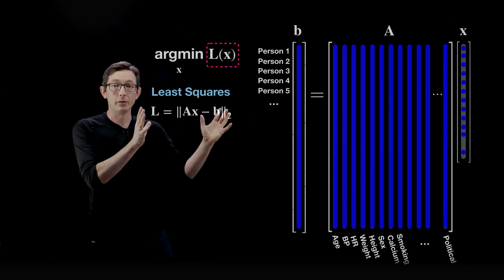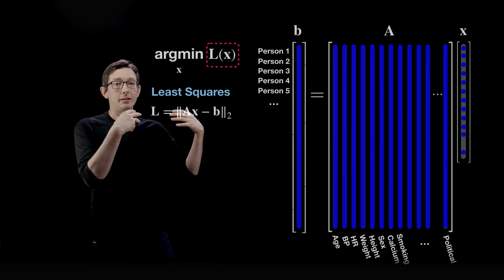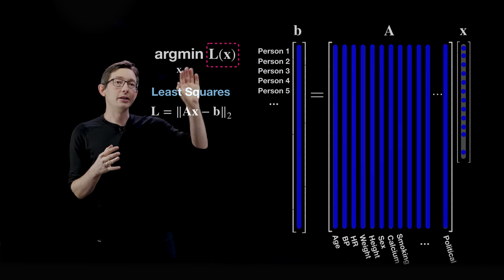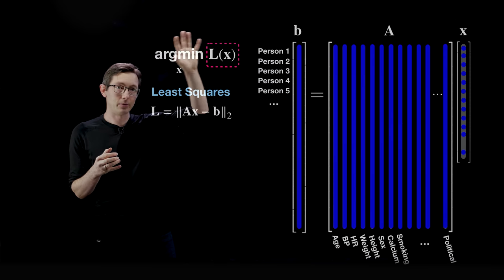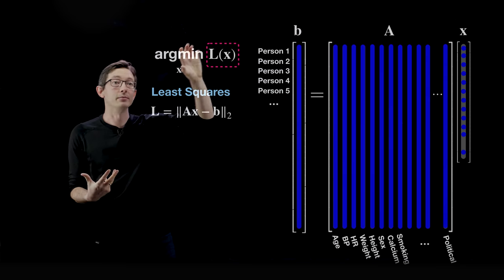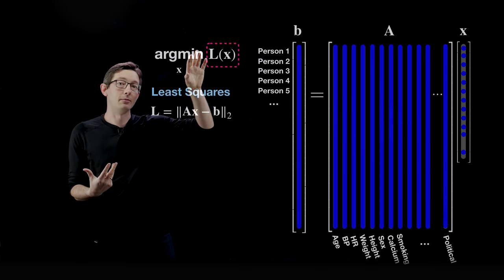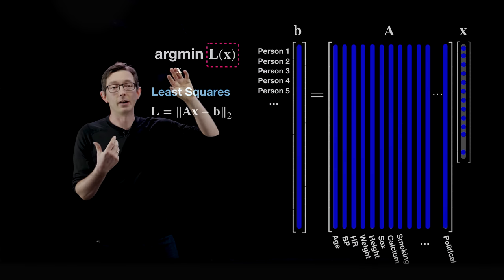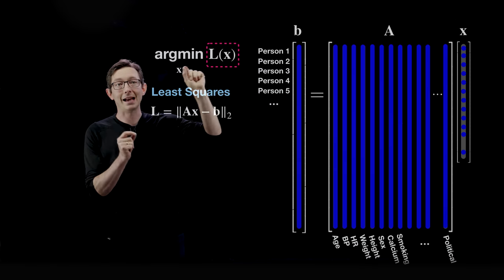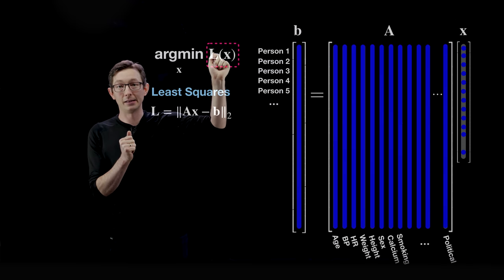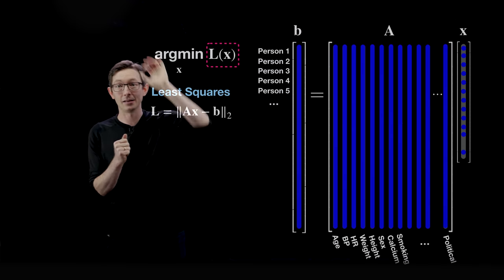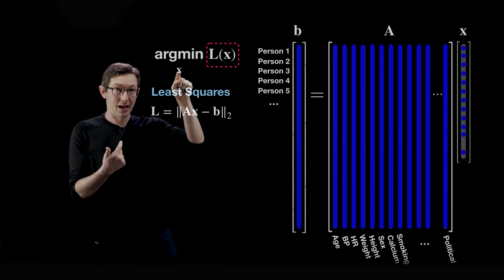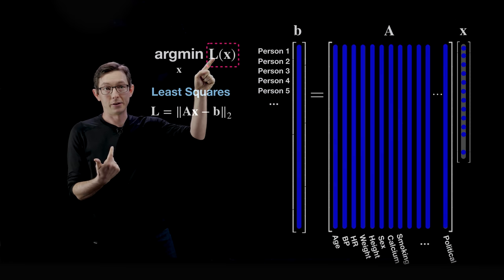By far the easiest, most straightforward thing to do is to use a least squares loss function. You would write the optimization problem as argmin with respect to X of this loss function. So you're trying to find the X value that minimizes this loss function — that's what argmin means, you find the argument X that minimizes the loss function.